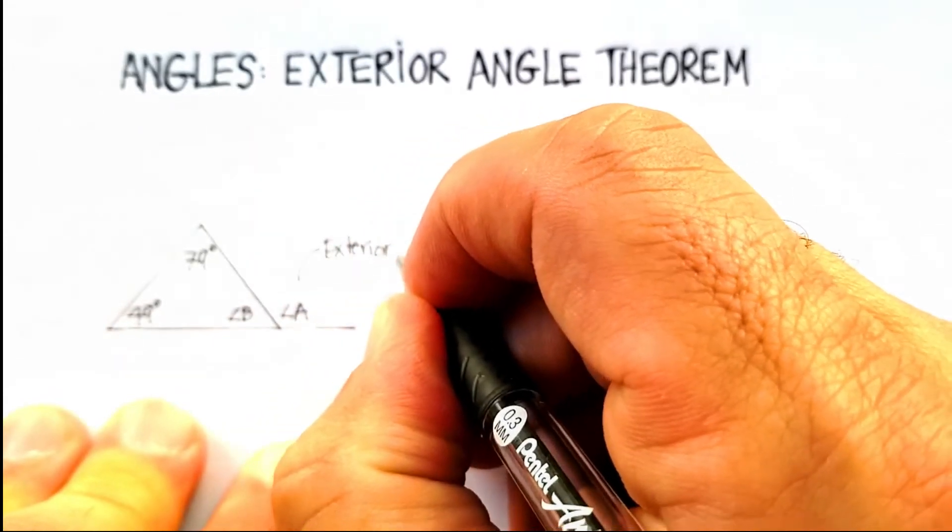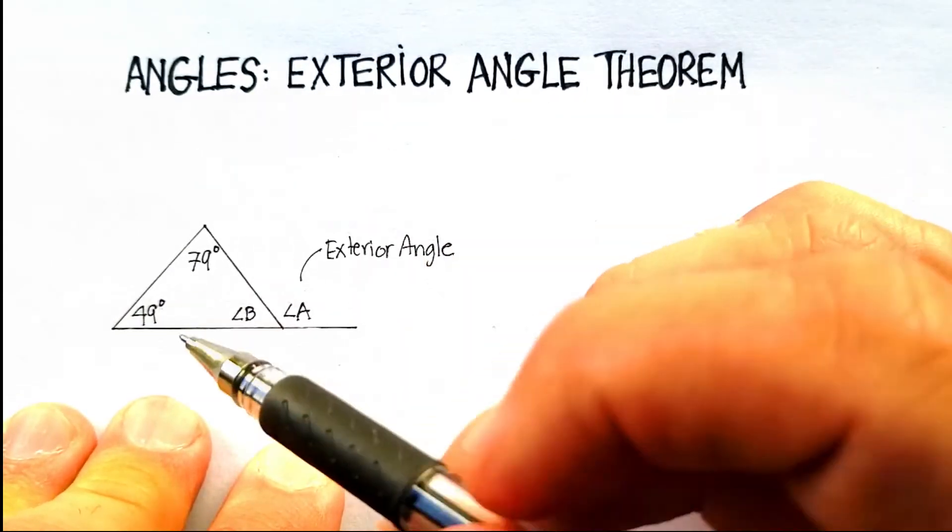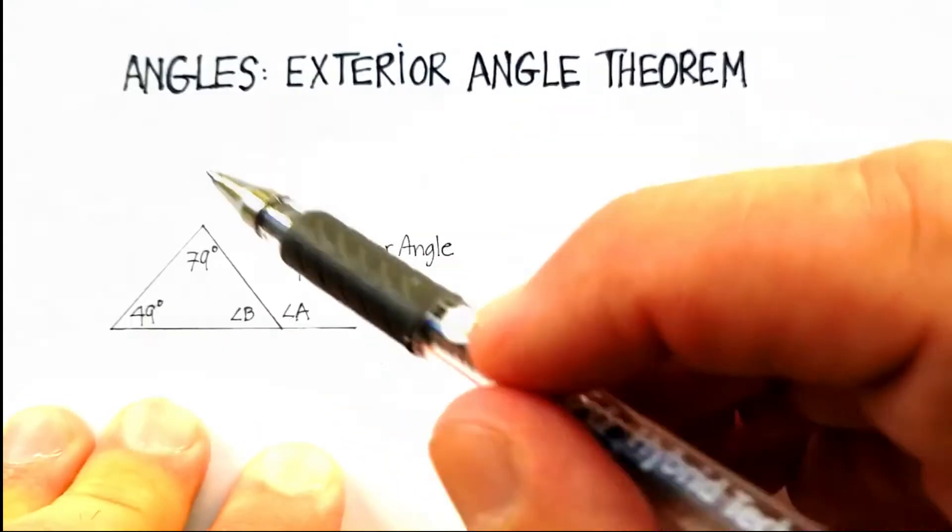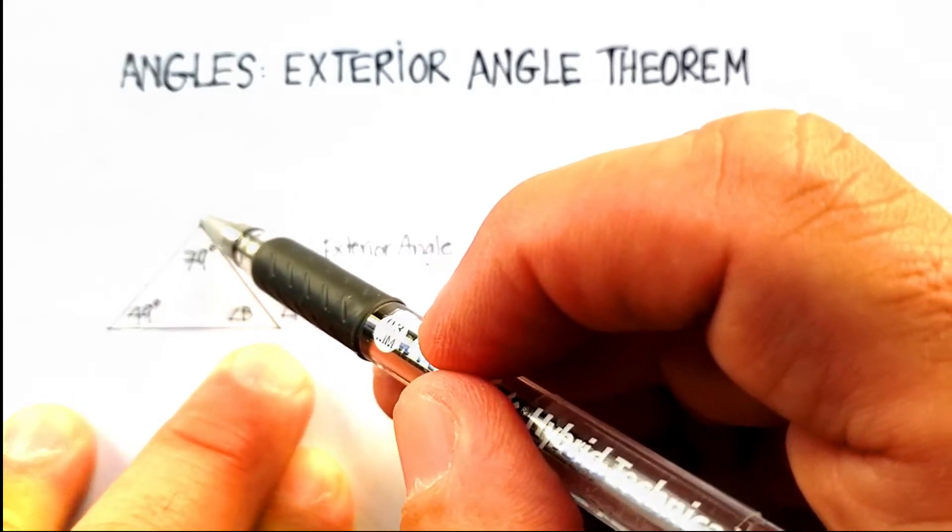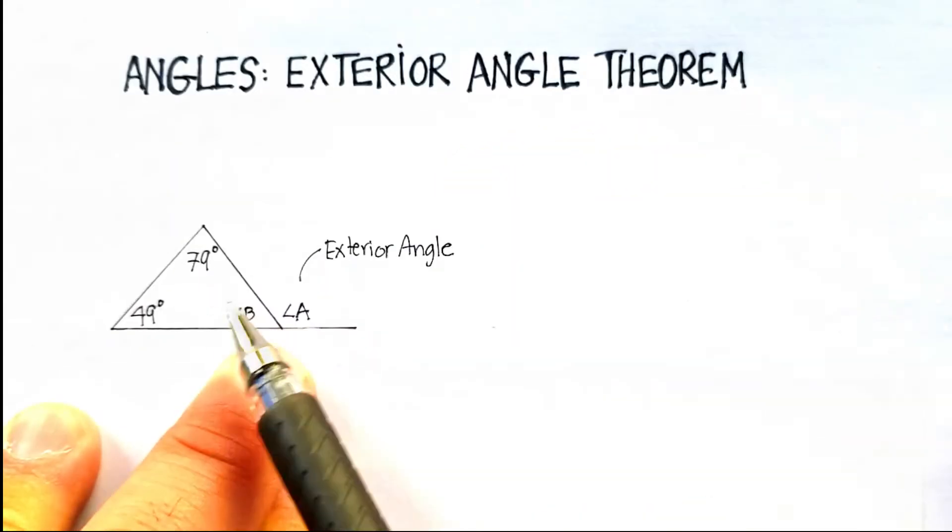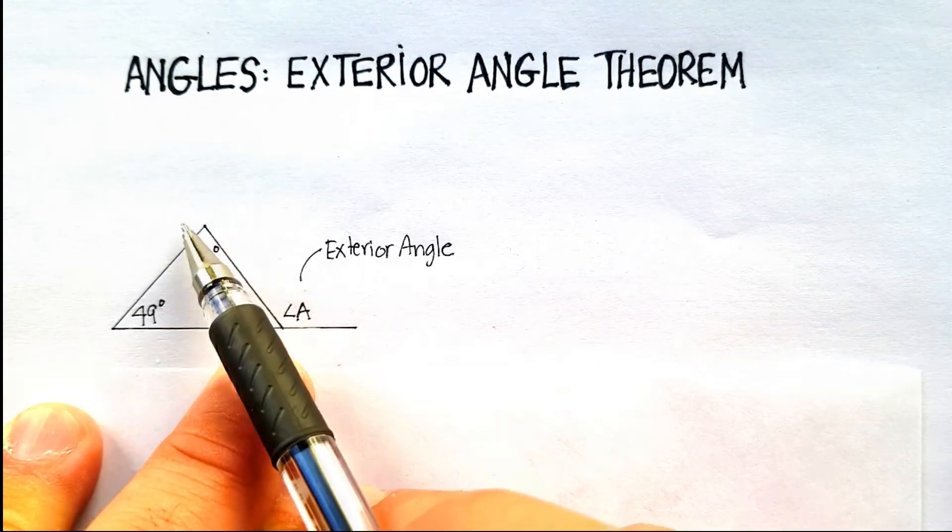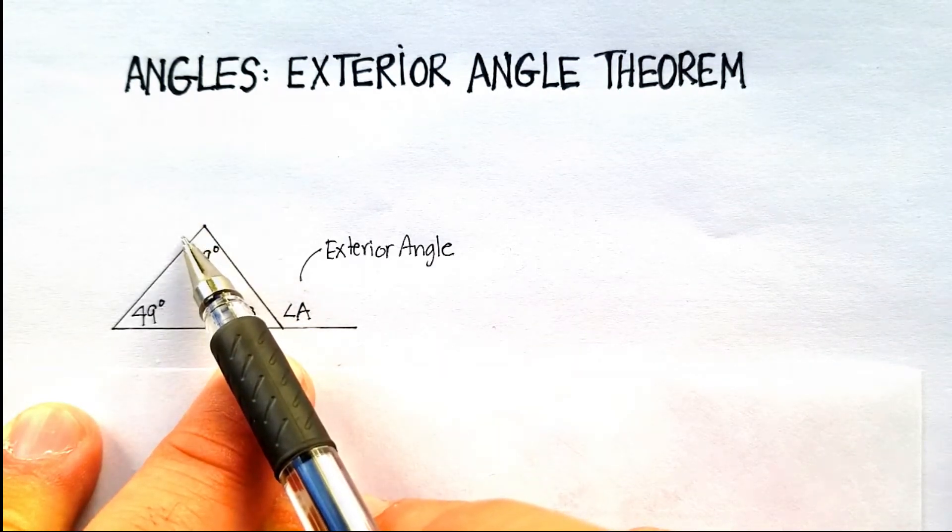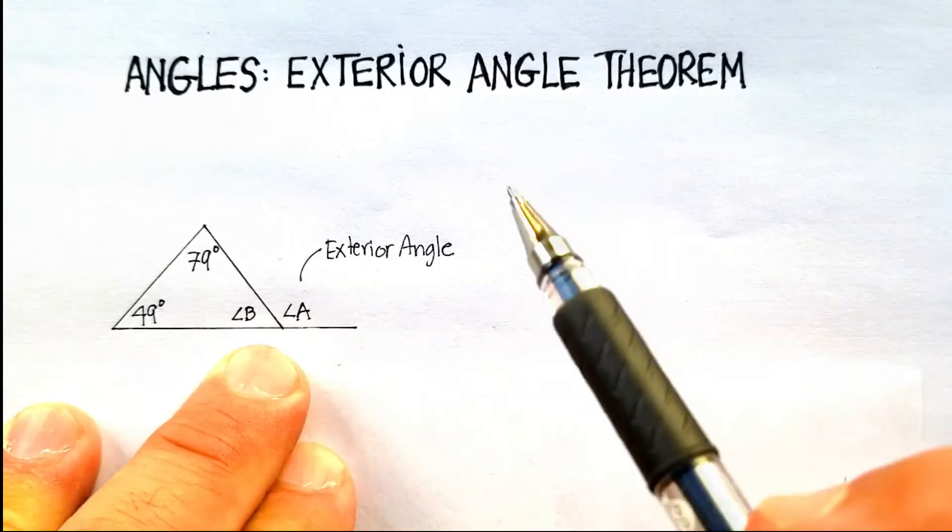Now you can create an exterior angle really anywhere on this triangle. If I would have, for example, taken this line here, this side, and I would have extended it all the way out there, so this is a straight line going this way. This angle outside would be the exterior angle, and then this one plus this one equals something.